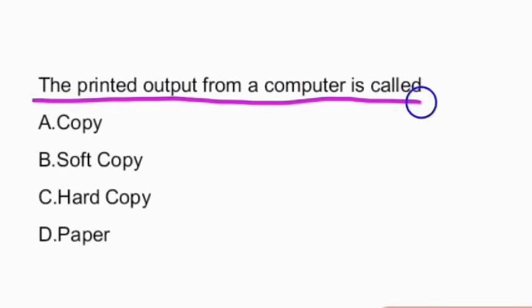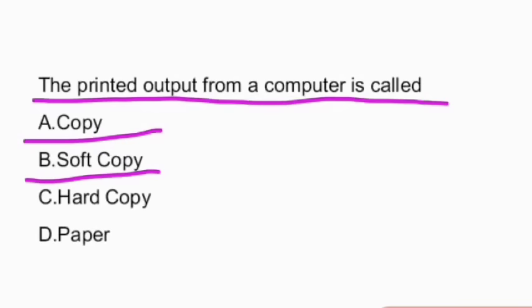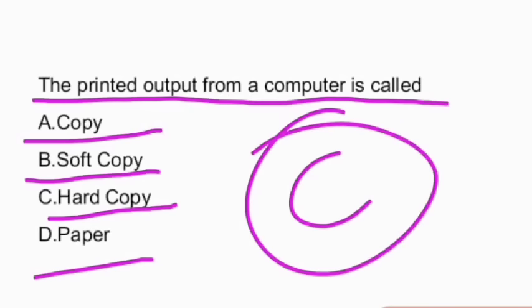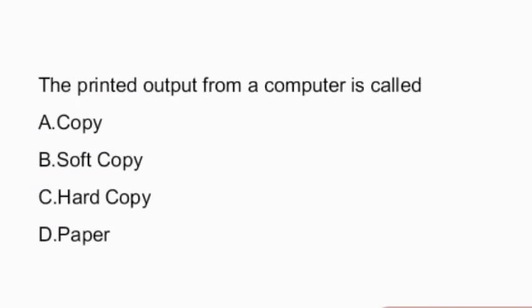Next question: the printed output from a computer is called as? The options are copy, soft copy, hard copy, or paper. The answer is hard copy — the printed output is called hard copy.